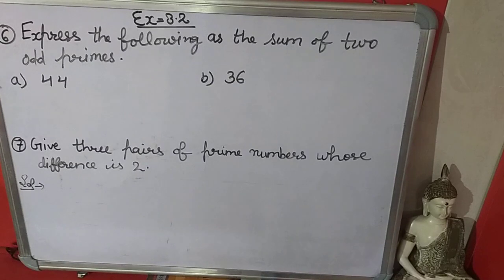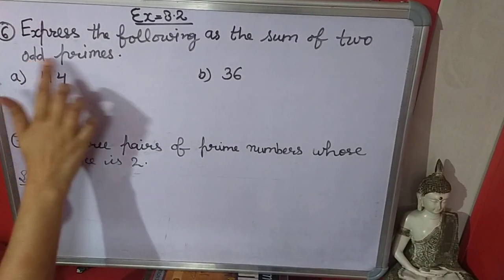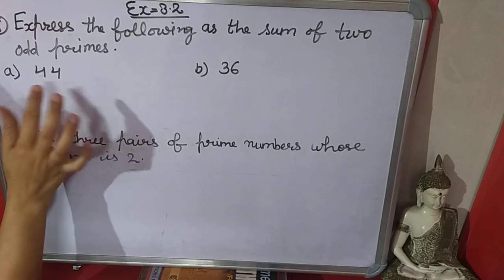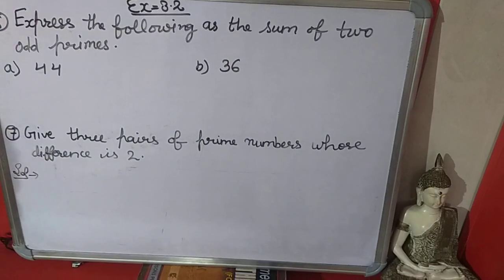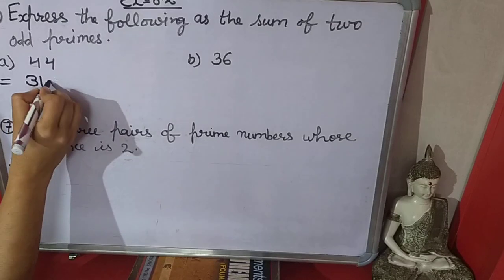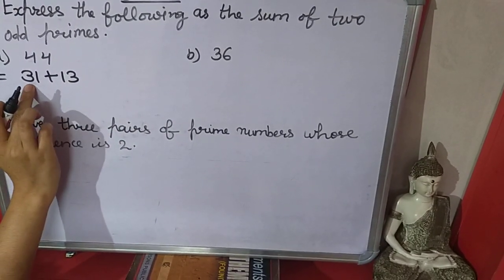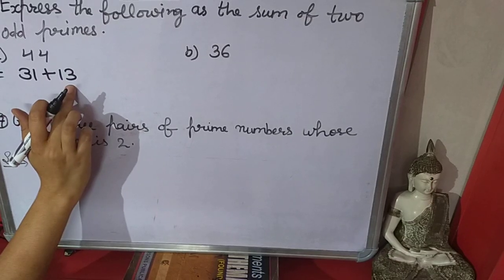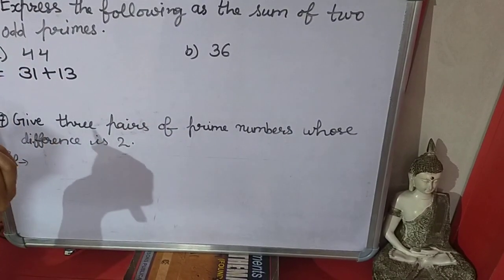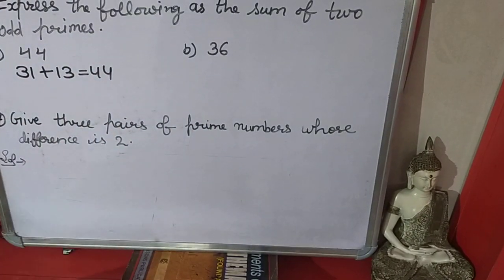The sixth question is: express the following as a sum of two odd prime numbers. You have to break this number into odd prime numbers such that when we add the two odd prime numbers, 44 will come. So there are many options. If I add 31 and 13 — 31 is odd and prime, 13 is also odd and prime — and when we add these, 44 comes. So 31 plus 13 is equal to 44.